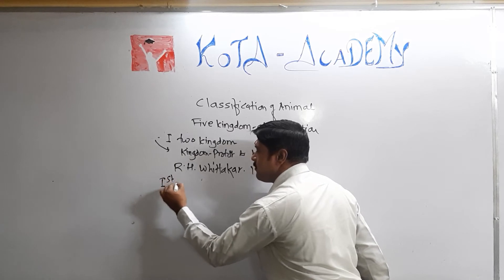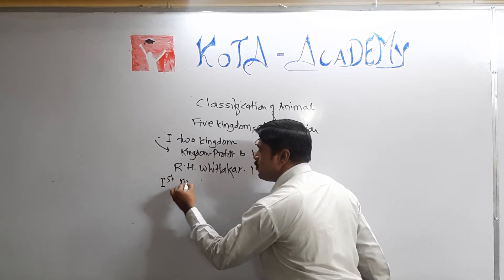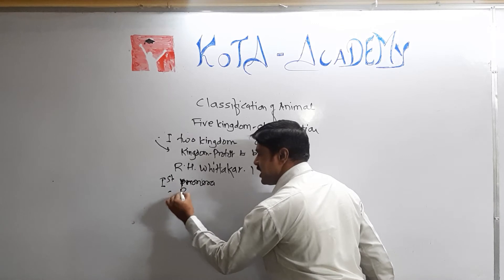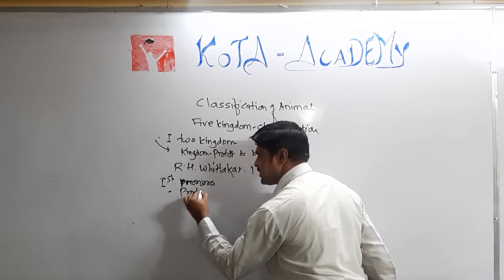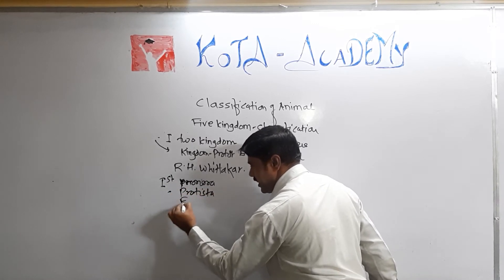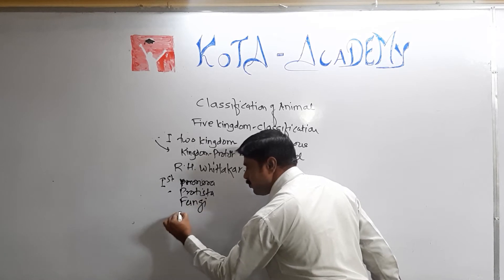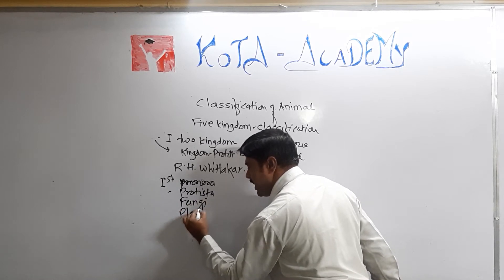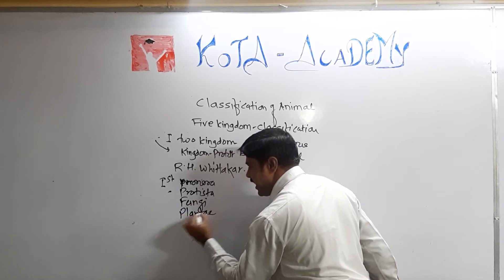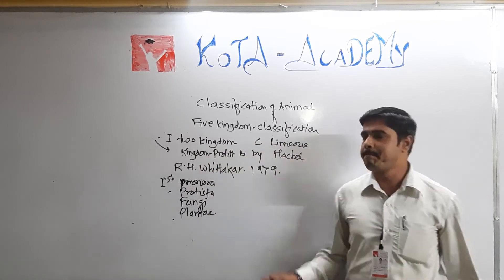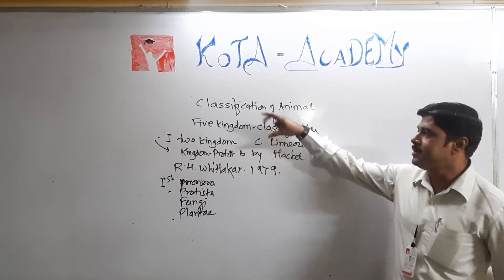The five kingdoms are: First Kingdom, Monera. Second Kingdom, Protista. Third Kingdom, Fungi. Fourth Kingdom, Plantae. And last, the Fifth Kingdom, Animalia.